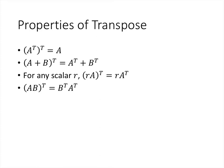Transpose has some nice properties that interact with things we've already talked about. First, if we transpose a matrix twice, we get back the matrix we started with. If we add two matrices and take the transpose, that's the same as taking the two transposes and adding the results. If we multiply a matrix by a scalar and take the transpose, it doesn't matter whether we multiply the scalar before or after the transpose. And this last one might seem surprising: if we take the product of two matrices and take the transpose, we get the product of the transposes in the opposite order — B transpose times A transpose.